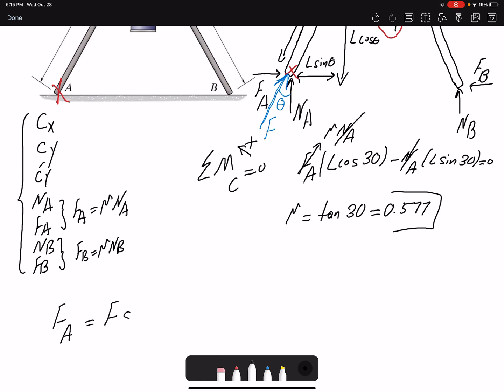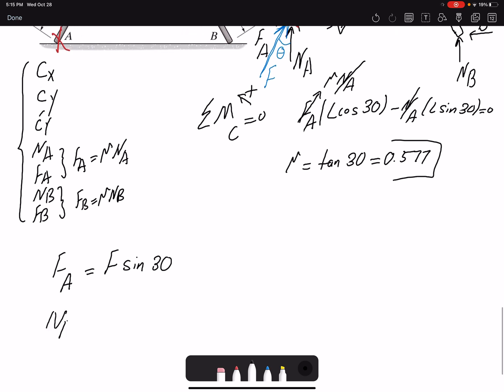Which means that FA would be F sine theta, or sine 30 here, and NA would be F cosine 30. And if mu is FA over NA, that means that we have tangent 30.